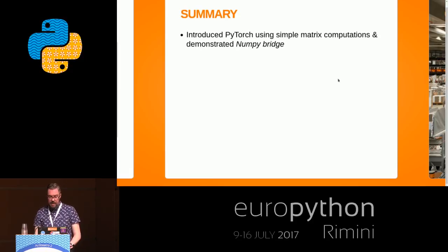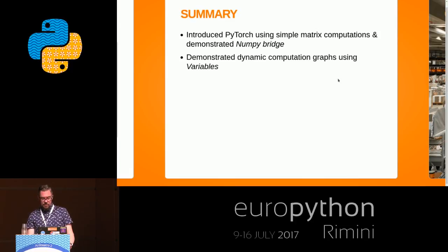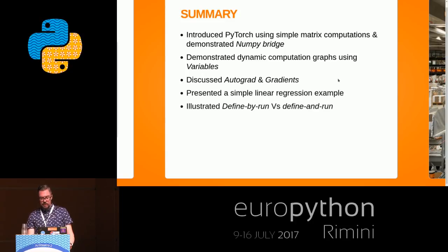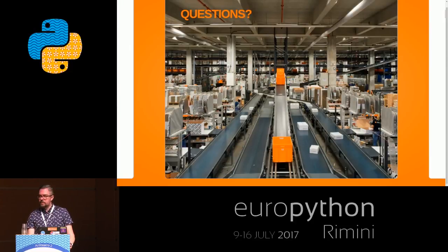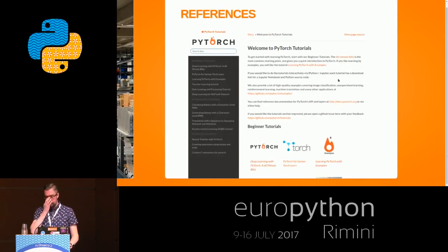To finish up: I discussed PyTorch tensors, the NumPy bridge, variables and computation graphs, gradients and autograd, gave a simple example, and illustrated the difference between define-by-run and define-and-run frameworks. Thank you very much.